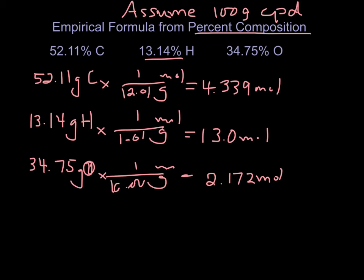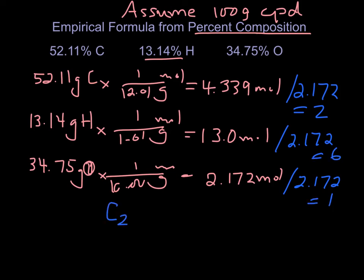So again, I'm not done. I've got to find the smallest number and divide them all by the smallest number. This will give me, hopefully, a round number, a nice whole number. This comes out to be 2, 6, and 1. So C2H6O, and I've got my compound.